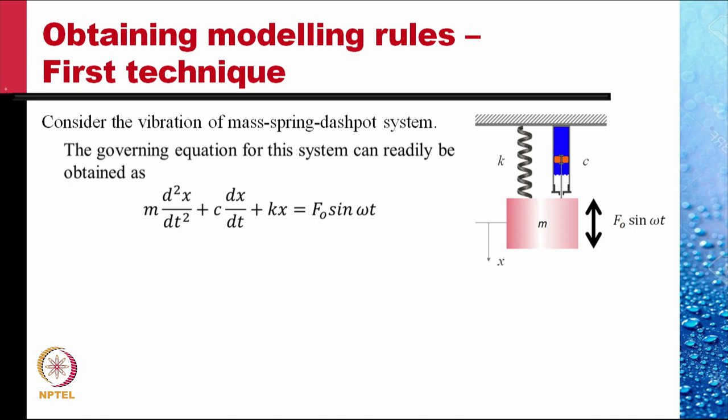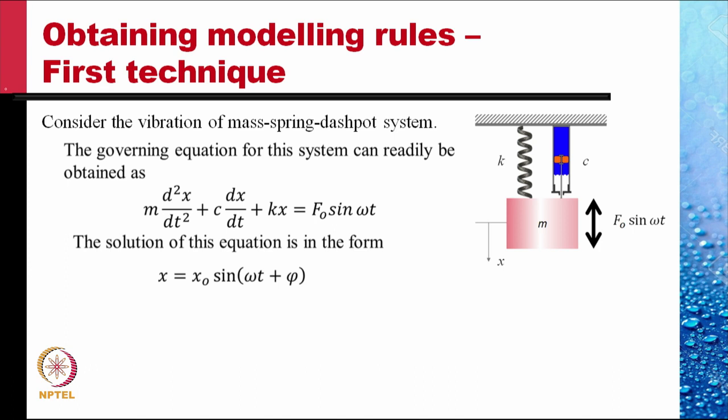Here, m is the mass, so m d²x/dt² is mass times acceleration. c is the damping constant, so c dx/dt is the damping force. k is the spring constant, so kx is the spring force, and these forces sum to the force driving the mass to vibrate. The solution of this equation is of the form x = x₀ sin(ωt + φ), where x₀ is the amplitude of vibrations and φ is the phase difference from the forcing frequency.